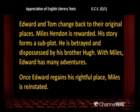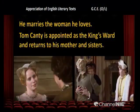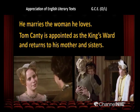Edward and Tom change back to their original places. Miles Hendon is rewarded — his story forms a sub-plot in the novel. He was betrayed and dispossessed by his brother Hugh, but with Miles, Edward had many adventures. Once Edward regains his rightful place, Miles is reinstated and marries the woman he loves, Lady Edith. Tom Canty is appointed as the king's ward and returns to his mother and sister. You can see the great graciousness of Prince Edward.